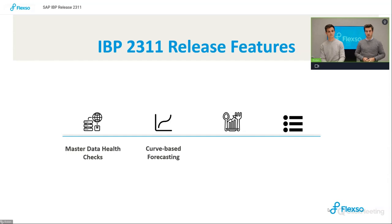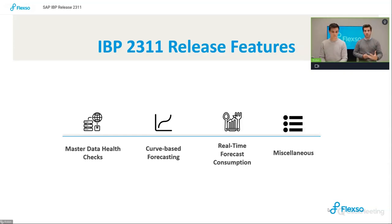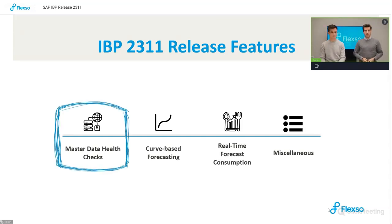Then we are going to take a look at curve-based forecasting — a new app and new algorithm which has been introduced. We'll then take a look at real-time forecast consumption, briefly explaining what forecast consumption is and what benefits it brings. Finally, we will end with some miscellaneous topics, smaller changes introduced into the IBP landscape, with a list and short explanations.